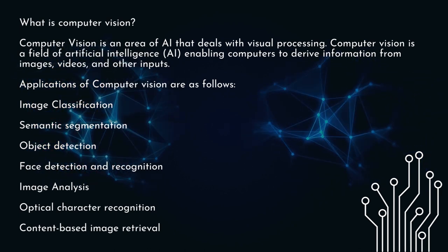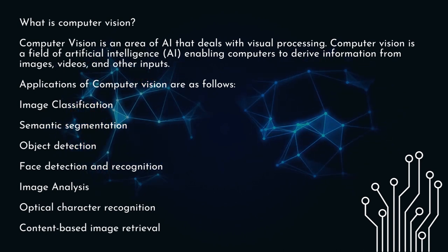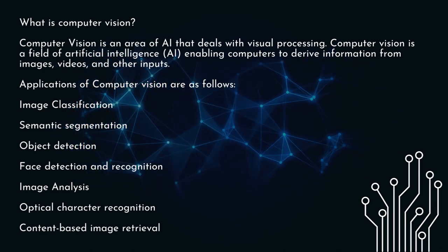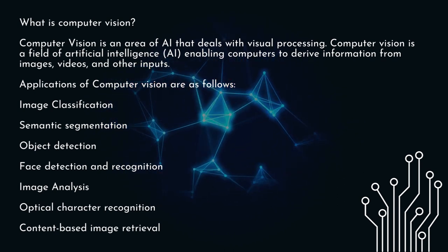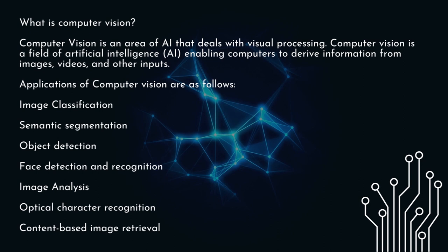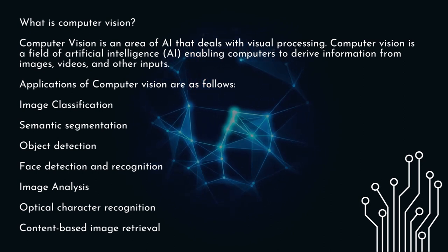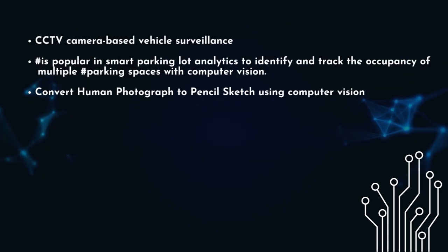Applications of computer vision are as follows: image classification, semantic segmentation, object detection, face detection and recognition, image analysis, optical character recognition, content-based image retrieval. CCTV camera-based vehicle surveillance is popular in smart parking lot analytics to identify and track the occupancy of multiple parking spaces.